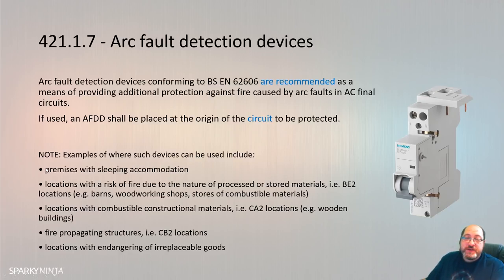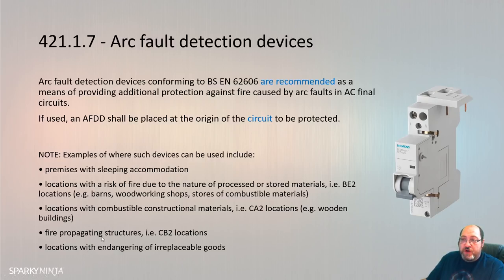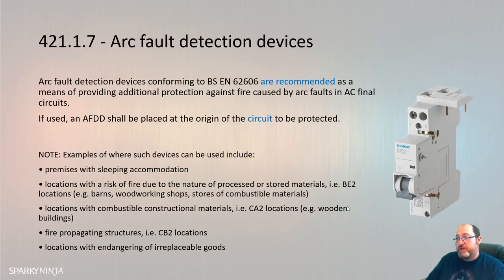How you decide on AFDDs is down to a risk assessment. Examples of where such devices can be used include premises with sleeping accommodation, locations with a risk of fire due to the nature of processes or stored material, locations with combustible constructional material or fire-propagating structures, and locations where irreplaceable goods are stored. Wherever there's a large financial or public consequence to fire, or a structure that can help spread fire, these devices would be appropriate.